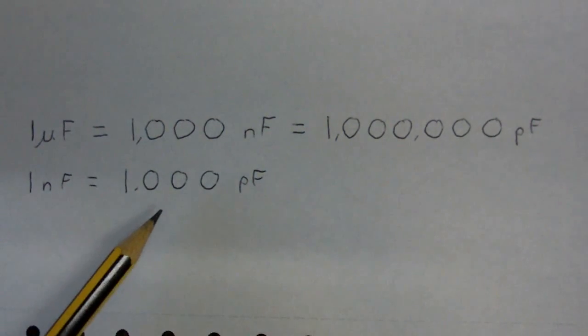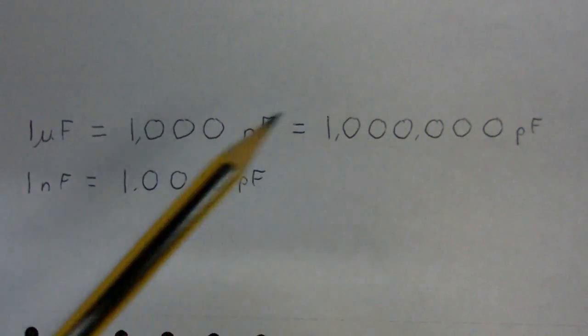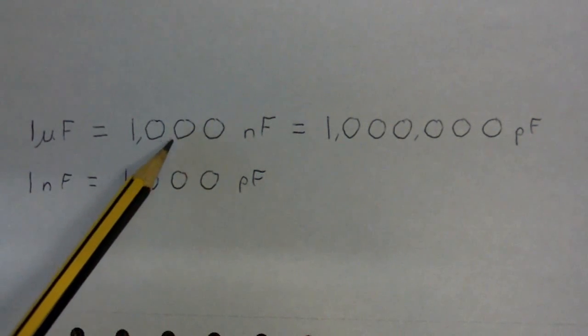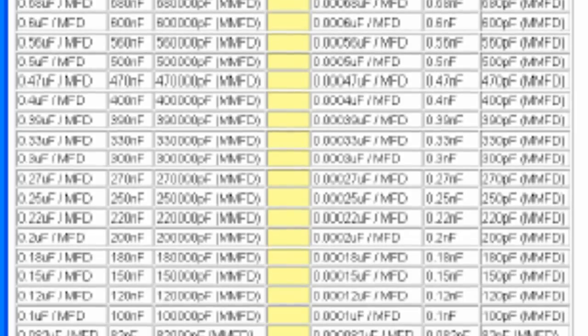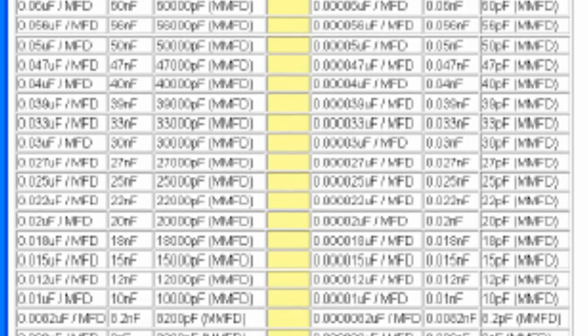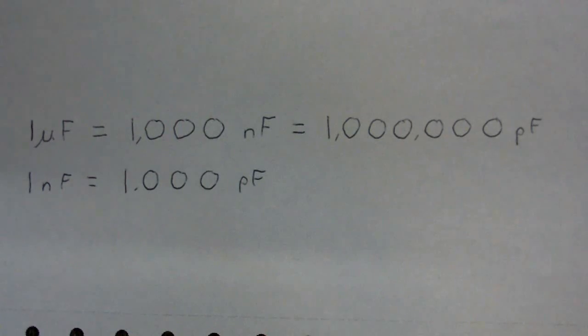Maybe this will clear things up. 1 microfarad is 1000 nanofarads, and 1 microfarad is also 1 million picofarads, and 1 nanofarad is 1000 picofarads. So, there's 1000 picofarads in a nanofarad, there's a million picofarads in a microfarad, and there's 1000 nanofarads in a microfarad. Now, you're probably confused at this point. I know I would be if I was learning this, but I'm going to put up a link to a chart that has all the capacitor values and what they are in picofarads and nanofarads and microfarads and whatever. Because on some schematics, sometimes you might need to convert between nanofarads and picofarads and whatever.